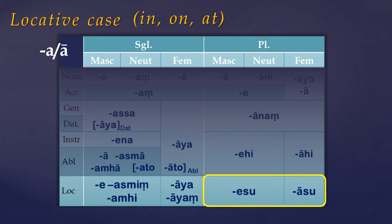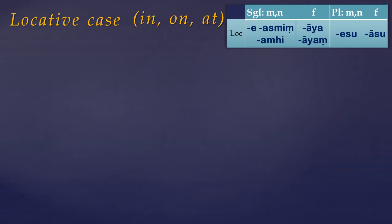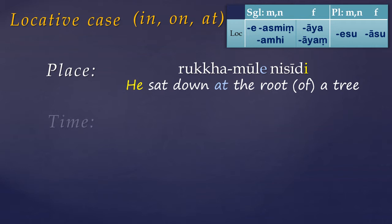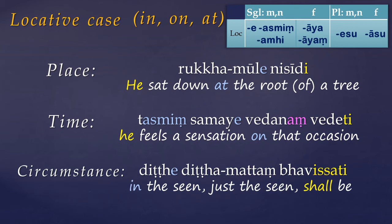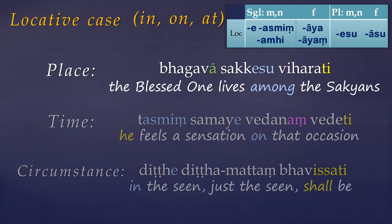This is now a complete declension table for A stem nouns. So let's look at how the locative noun is used. You probably won't be surprised to find that the locative noun indicates location — either the place, time, or circumstance in which an action takes place. In the plural, the locative noun can overlap a bit with the partitive genitive.